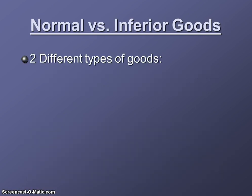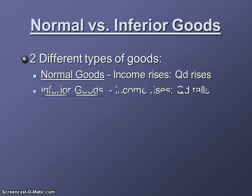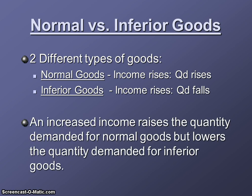There are two different types of goods, as we learned in Unit 2. Normal goods are goods for which, when your income goes up, you buy more of them, or if your income goes down, you buy less. Inferior goods are goods that you buy less of when you make more money. For example, a normal good would be steaks, and an inferior good would be ramen noodles. So an increased income raises the quantity demanded for normal goods, but lowers the quantity demanded for inferior goods.